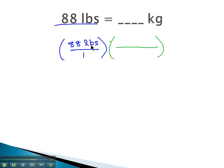To get rid of the pounds, we place them in the opposite location, in the denominator. In the numerator, we're changing them into kilograms.